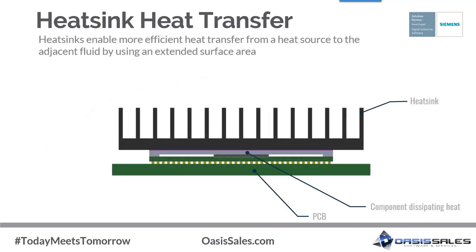A heat sink's purpose is to allow for more efficient heat transfer from a heat source to the surrounding fluid and environment. Whether heat is convecting to fluid passing over it or radiating to the surrounding environment, surface area is a key factor for efficient heat transfer. Heat flows from higher temperatures to lower temperatures and only transfers when there is a temperature difference.